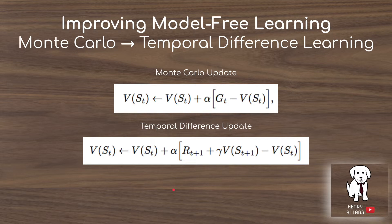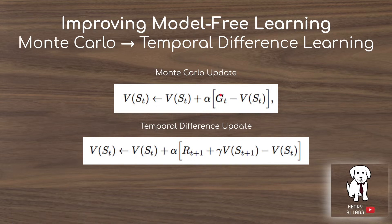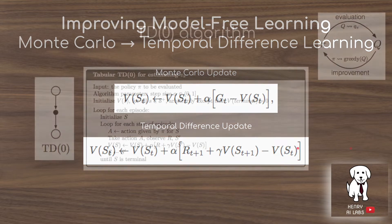The key idea of temporal difference learning is to improve model-free reinforcement learning. In chapter five, we saw the Monte Carlo update, where we update the value estimate of a state by sampling an episode and receiving return G sub T, then taking the error of our return minus the value estimate. In temporal difference learning, we use bootstrapping from the Bellman equations — using the value estimate of the successor state to shortcut computation of the current time step's value, then subtracting our original prediction.